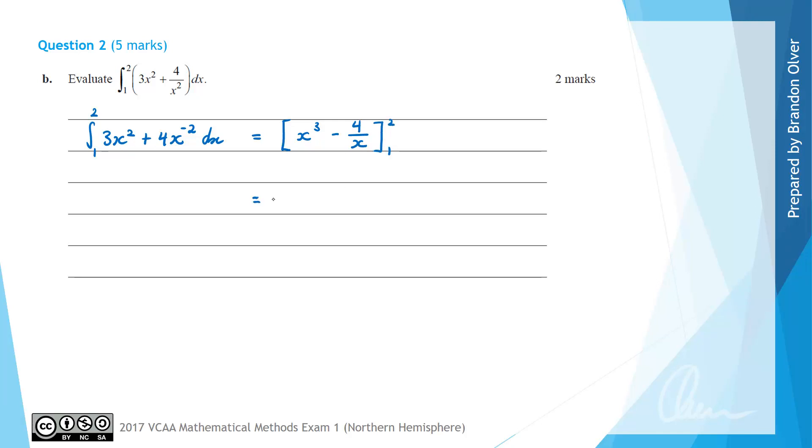Next we can evaluate that by substituting in the upper bound. So we're going to have 2 substituted in which is 2 cubed minus 4 divided by 2. Then we subtract away the antiderivative with 1 substituted in. So we're going to have 1 cubed minus 4 divided by 1.